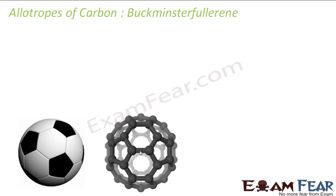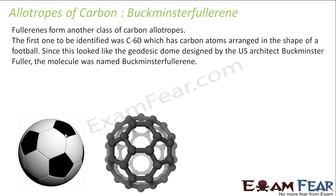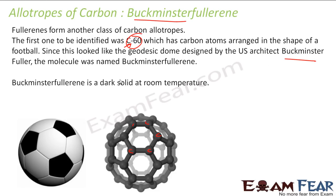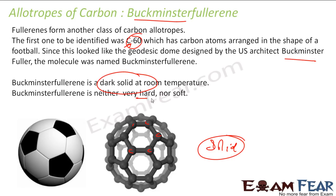The other allotrope is Buckminster Fullerene, which is very recently discovered. They are in the form of carbon molecules, and the first one to be identified was C60. There are many versions — C70, C80, and others. Buckminster Fullerene is named after US architect Buckminster Fuller. It is a dark solid at room temperature and is neither hard nor soft.